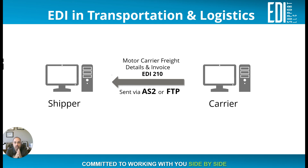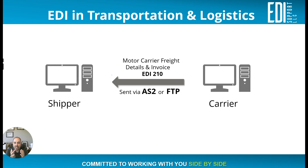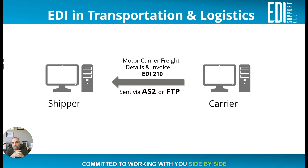Once the product is delivered to its final destination, the carrier wants to get paid, so they send a Motor Carrier Freight Details and Invoice — also known as a 210 document. So to summarize, the documents moving along this pathway are: the 204, the 990, the 213, the 214, and the 210.